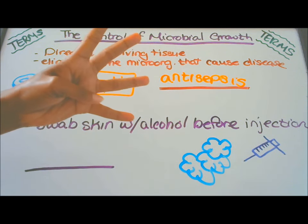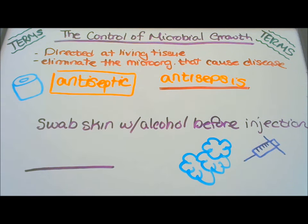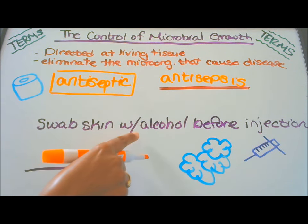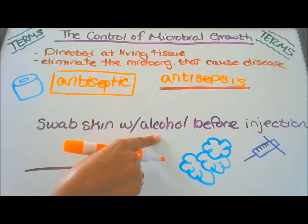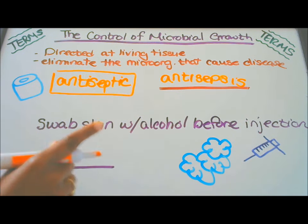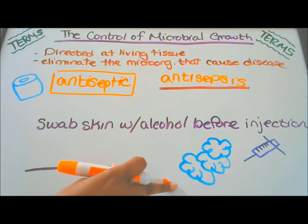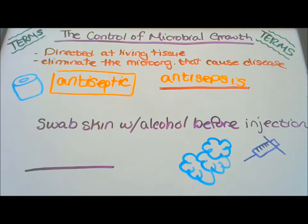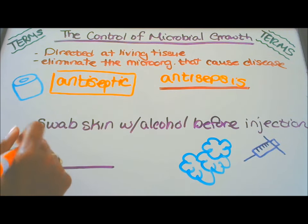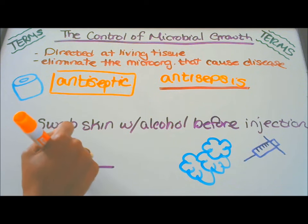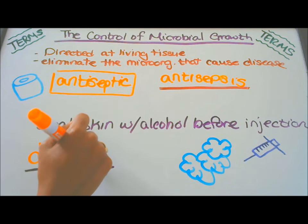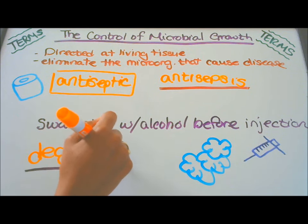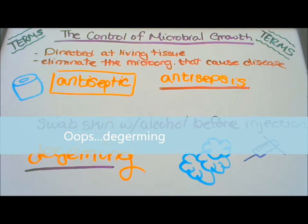Our fourth definition: swab skin with alcohol before injection. Here I have cotton balls and a needle. This is called de-germing. Simple enough.